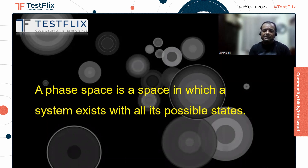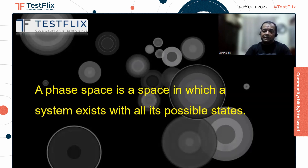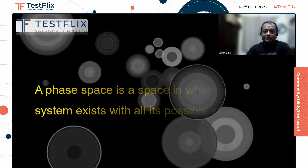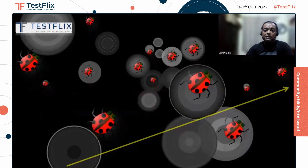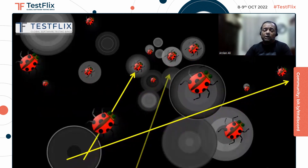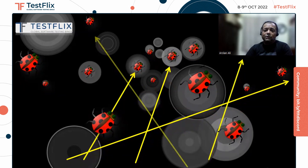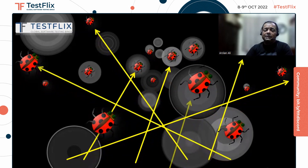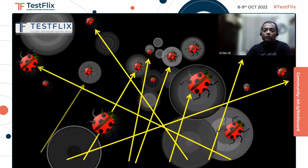If a tester needs to test the system, they need to ensure that the space contains all the system states and its possibilities within that space. But there are certain challenges in discovering coverage and bugs within that phase space. The challenge is that it's like a short arrow shot in the dark — we don't know how to discover the important bugs within the limited timeframe.